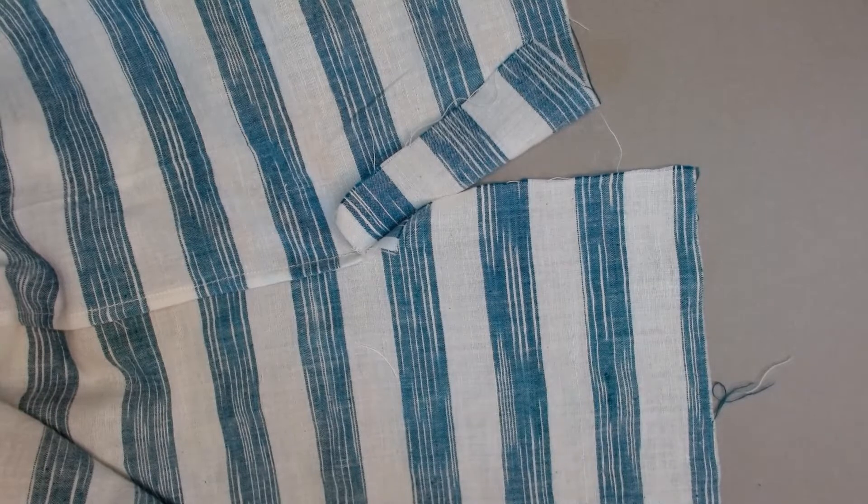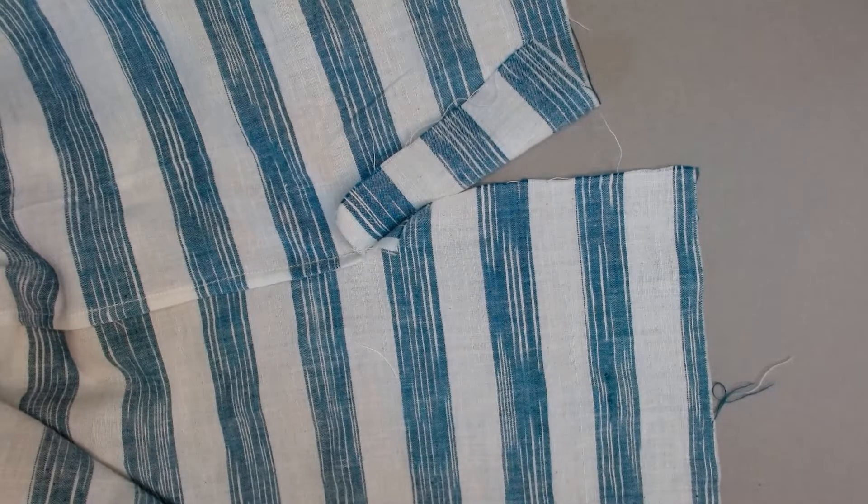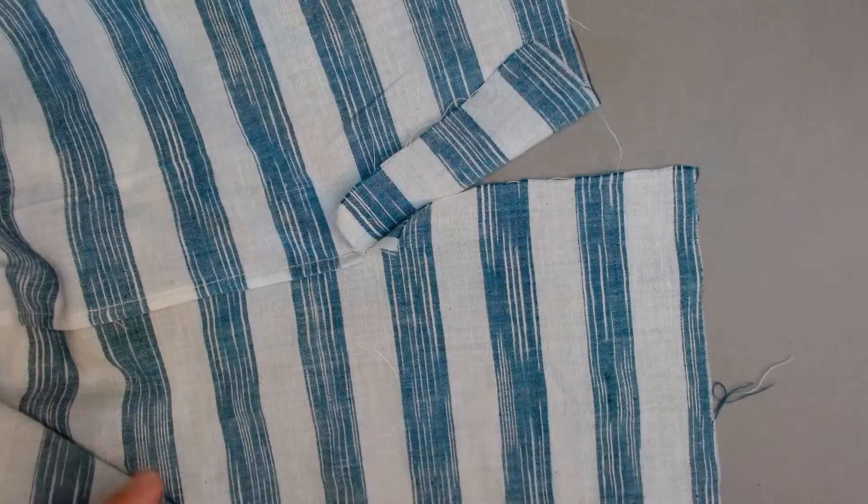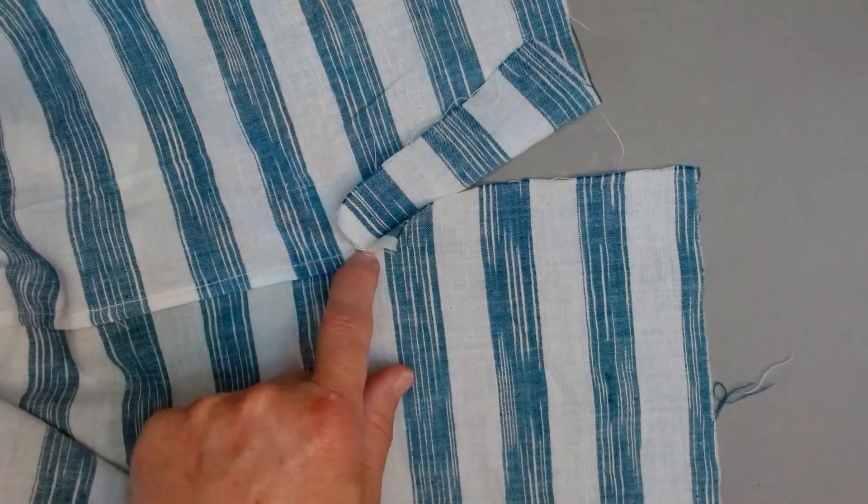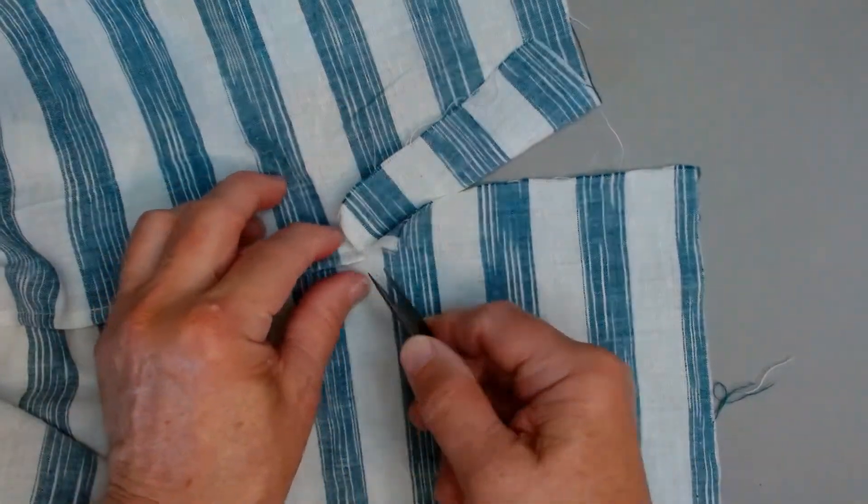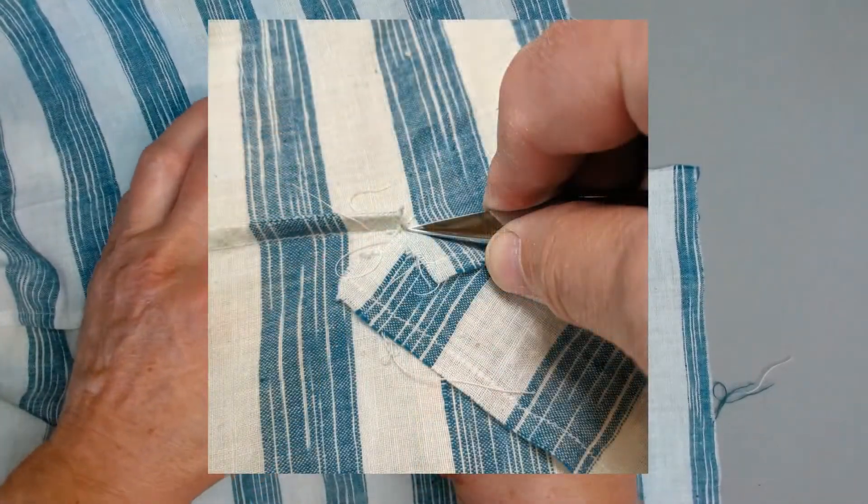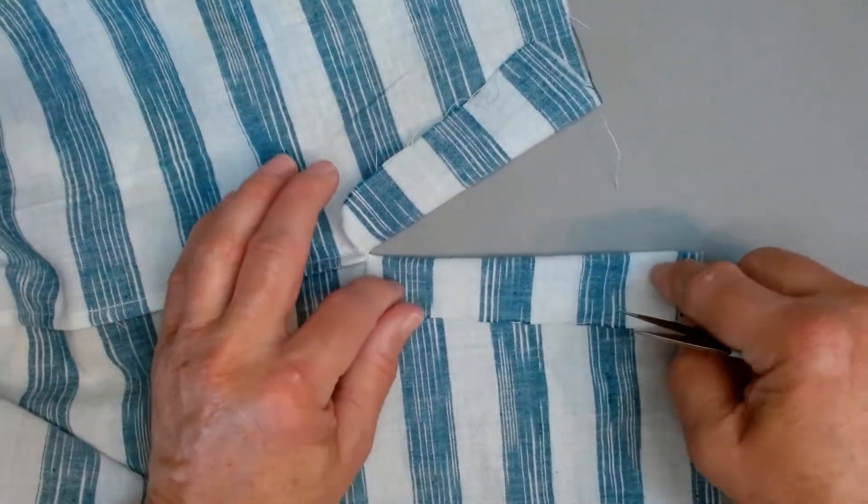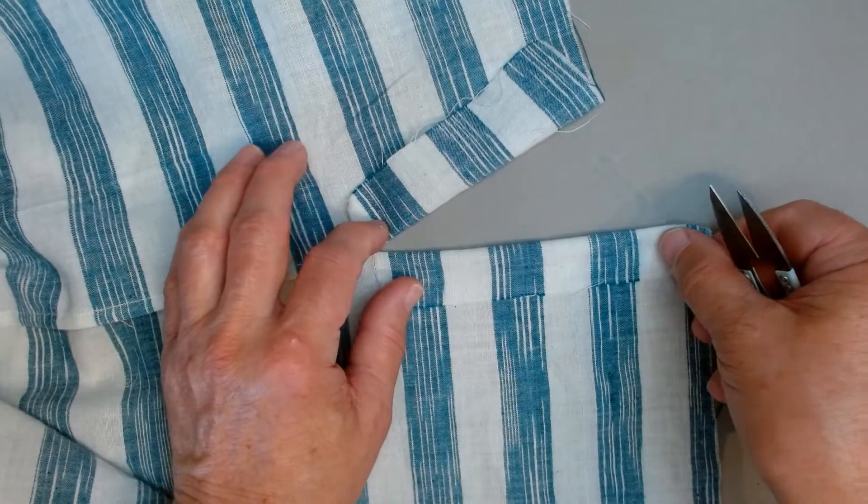We are finally ready to actually create the mitered shirt vent. In the last segment, we did a French seam along this side, and that French seam has been clipped right into the stitching line right here, which allows our little vent pieces to fold back.